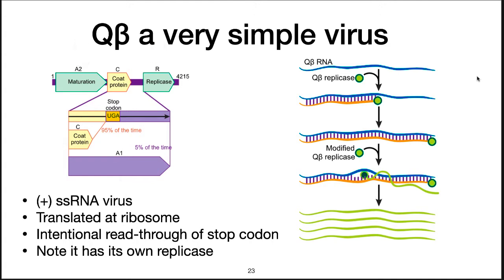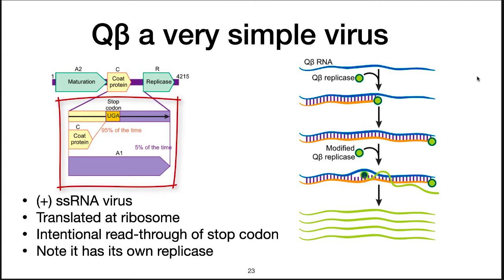A1 forms because of a mistake by the ribosome. About 1 in 20 times it reads through a stop codon, inserting a tryptophan instead. This error leads to the A1 protein. A viral capsid needs 60 coat proteins and 3 A1 proteins, so it's clear this mistake is by design because you get exactly that — 20 coat proteins for every 1 A1 protein.